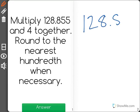So I have two factors, 128.855 and 4. And just like a long multiplication problem, I treat it the same as I multiply.